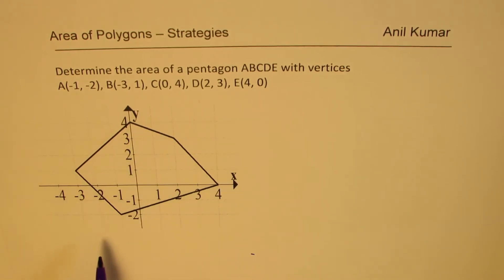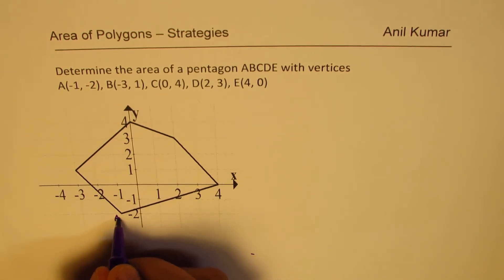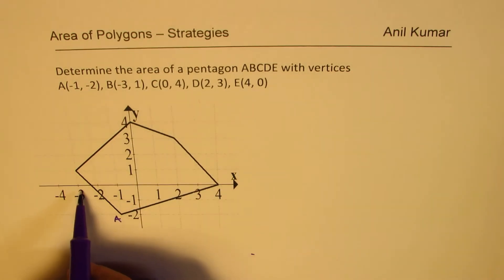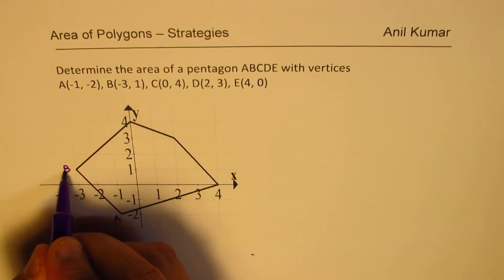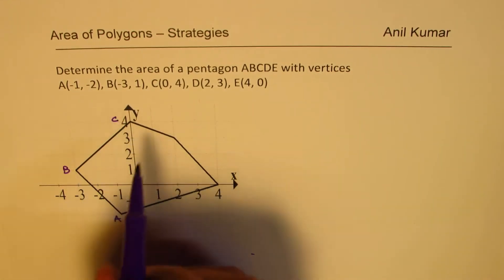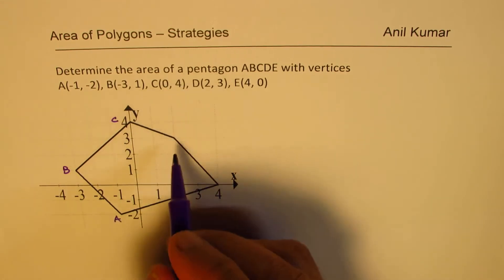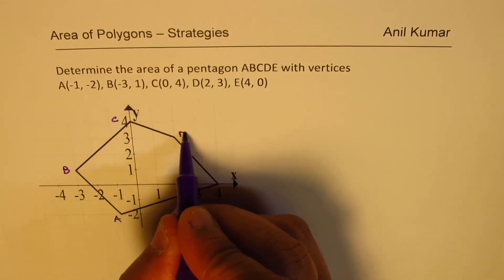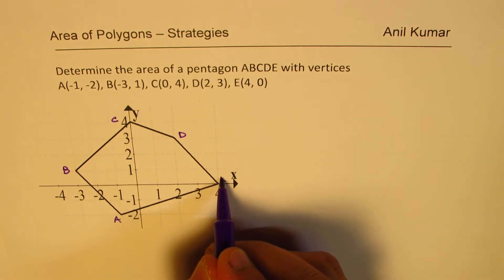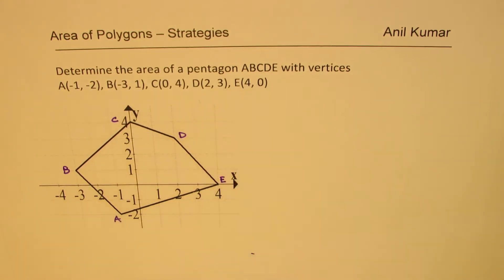So here is the pentagon where the vertices A(-1, -2) is right there. B(-3, 1) is this one. C(0, 4), D(2, 3), and then here we have E(4, 0).